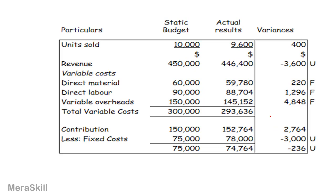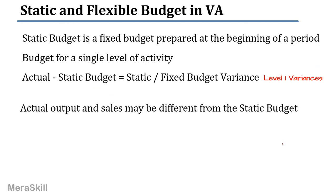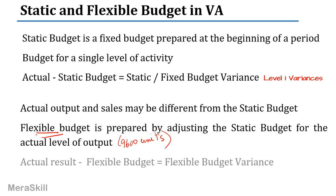So you understand what the static budget variance is. When you compare the static budget to the actual, you get the static budget variance — in this case 236 unfavorable. Now, actual output and sales may be different. So we prepare not a static budget, but a flexible budget. We adjust the static budget for the actual level of output — for 9,600 units — using the standard cost for actual output. The difference between actual and the flexible budget gives the flexible budget variance.